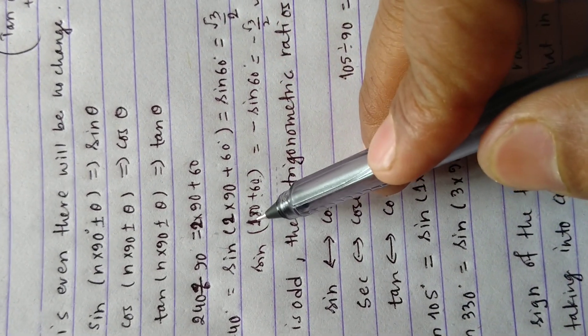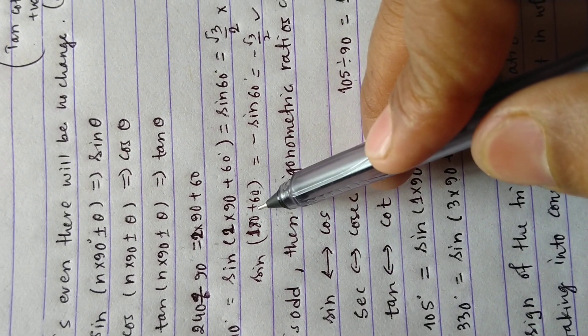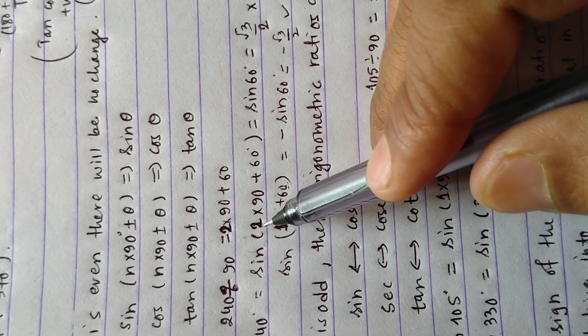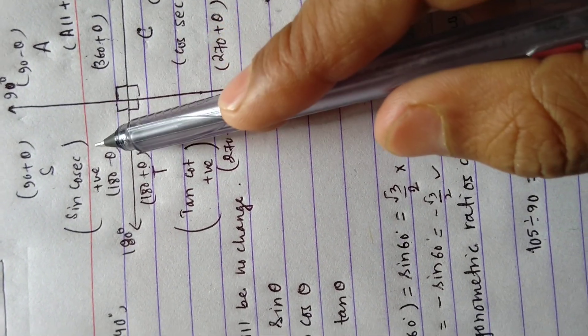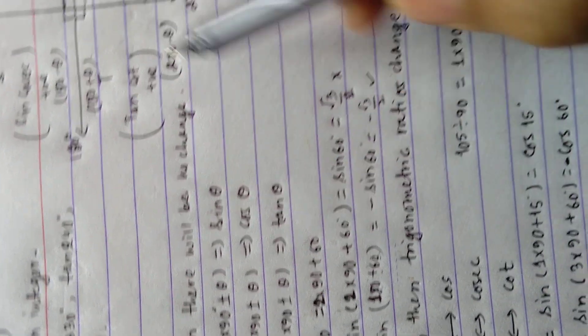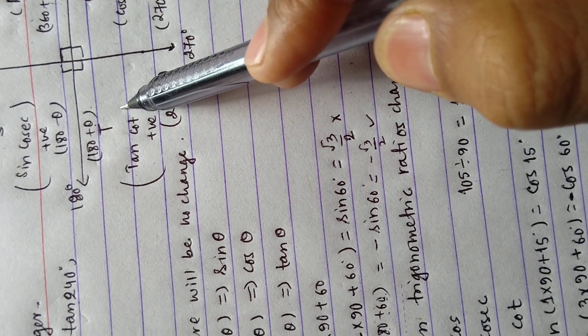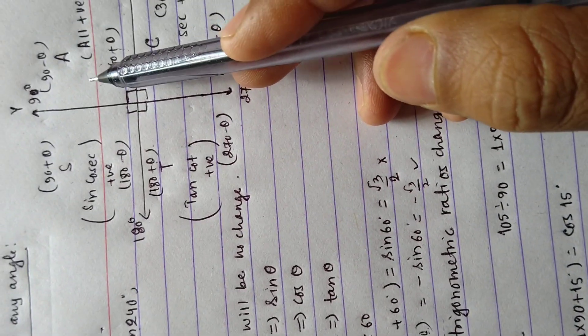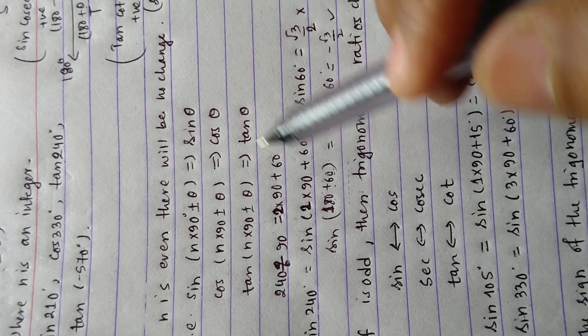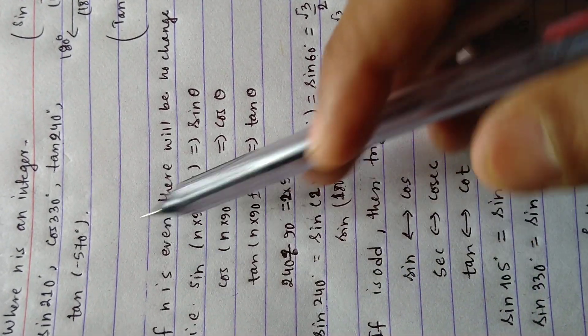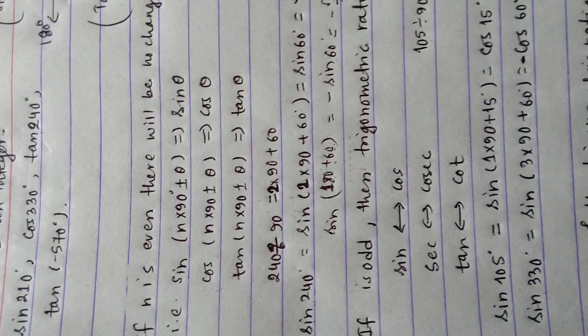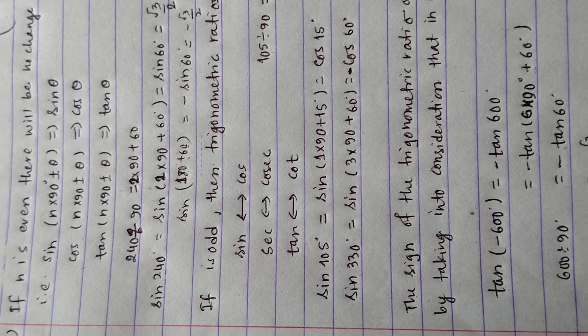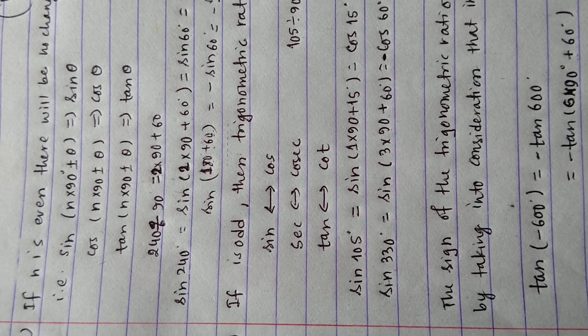When there is minus, then we don't have to count the third quadrant—we should stay in the same quadrant. This consideration applies to all trigonometric ratios: sine, cos, tan, cot, sec, and cosec. This is all about this topic. Hope you guys understood. If you have any questions, please leave your comment below. Thank you.